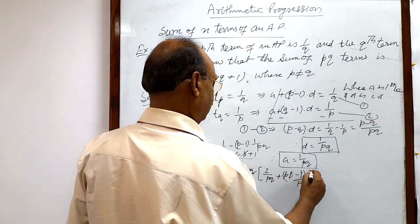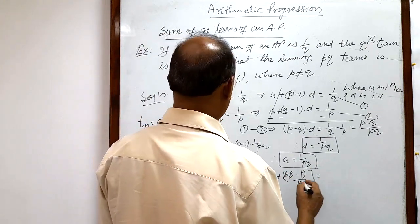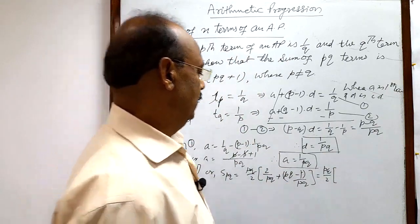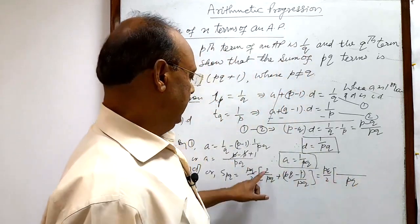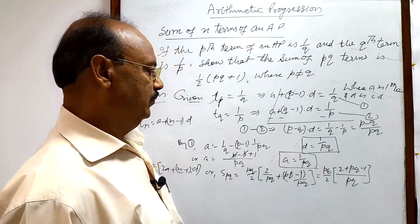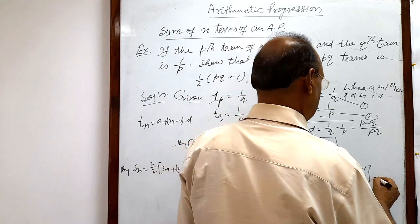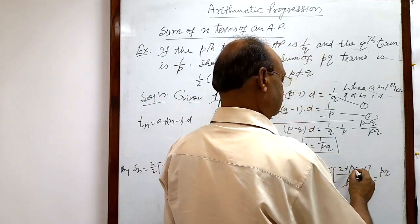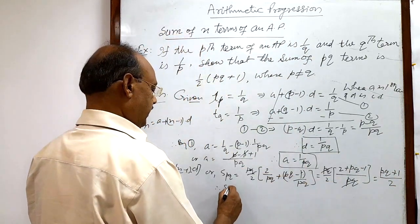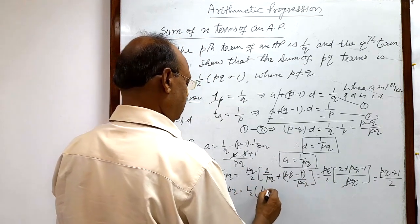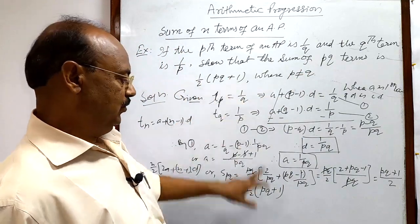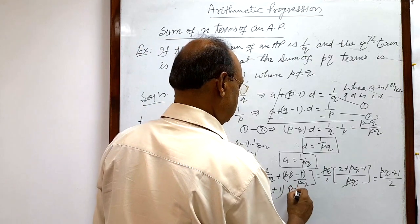d is 1/pq. Simplifying, the LCM inside the bracket is pq, giving numerator 2 + (pq − 1). The pq in the denominator cancels with the pq outside, leaving S_pq = (pq/2) × (pq + 1)/pq = (1/2)(pq + 1). Therefore S_pq = half of (pq + 1), which is what was required to prove.